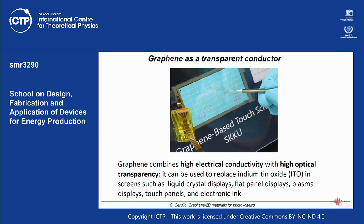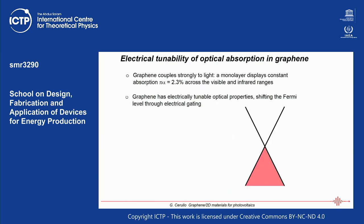Graphene as a transparent conductor is one of its first real practical applications, also important in photovoltaics where you need an electrode that can also couple light out of the device. Another remarkable property of graphene is electrical tunability. Typically a material's absorption cannot be easily tuned electrically, but with graphene you can achieve dramatic effects. A monolayer displays a constant absorption of 2.3% across visible and infrared ranges.